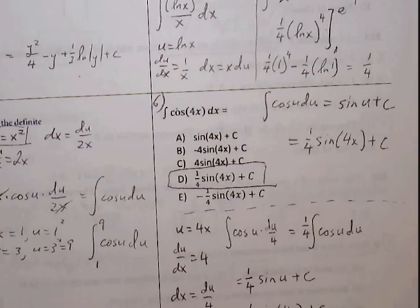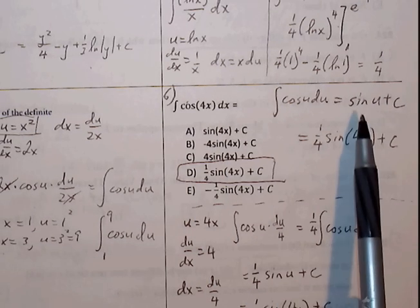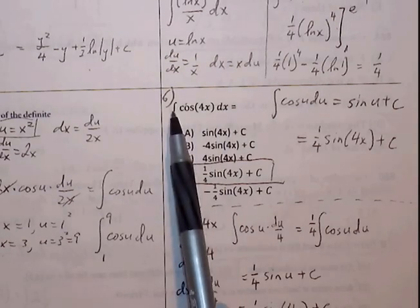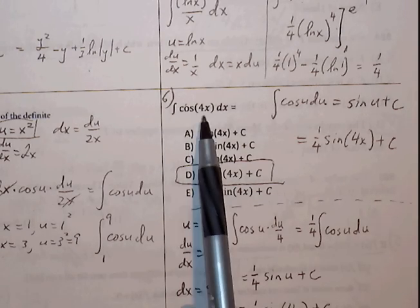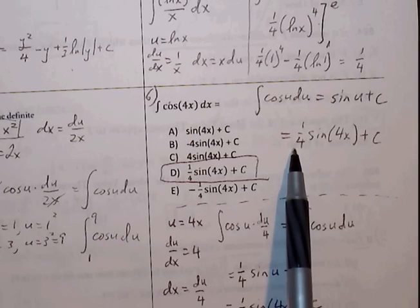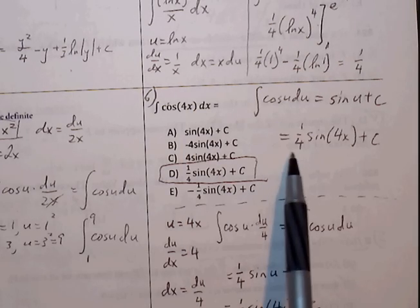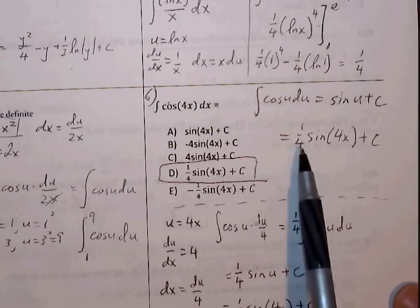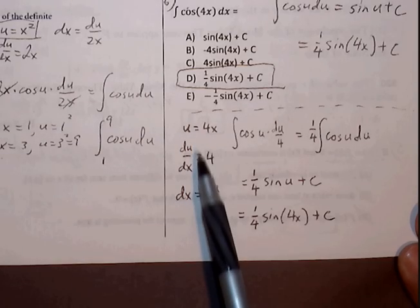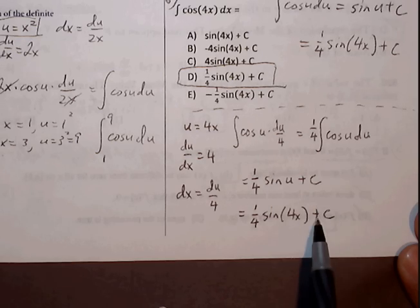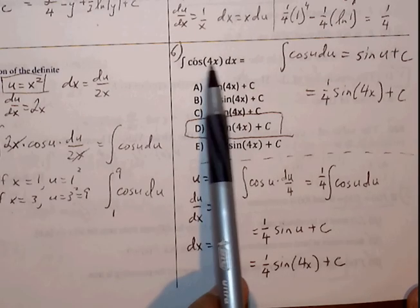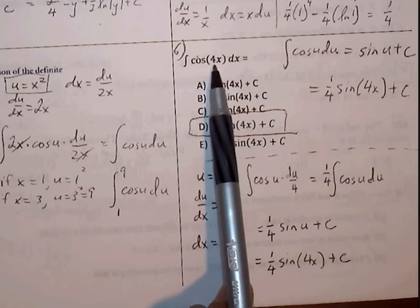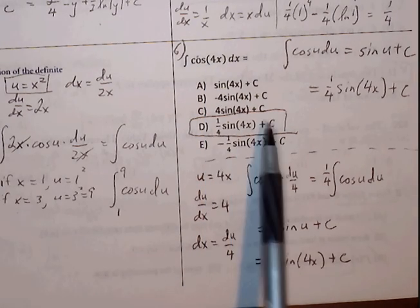Number 6: the integral of cosine of 4x. We know the integral of cosine u is sine u plus c. Because of the 4x, something will be produced — the reciprocal of 4 is one-fourth — so we get one-fourth sine of 4x plus c. This is a shortcut: the 4x produces a one-fourth. You can also go through u-substitution and see the same pattern, especially with simpler linear u-values. Answer choice D is the correct solution.